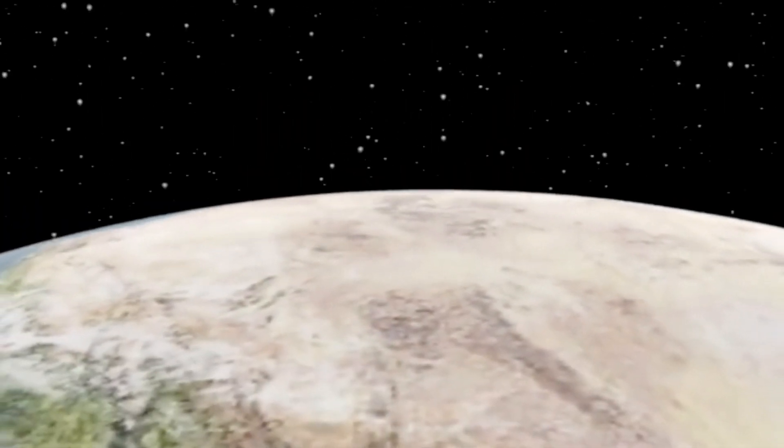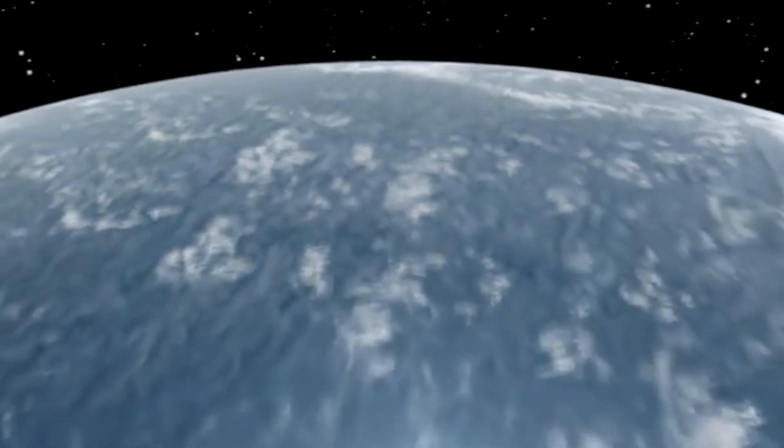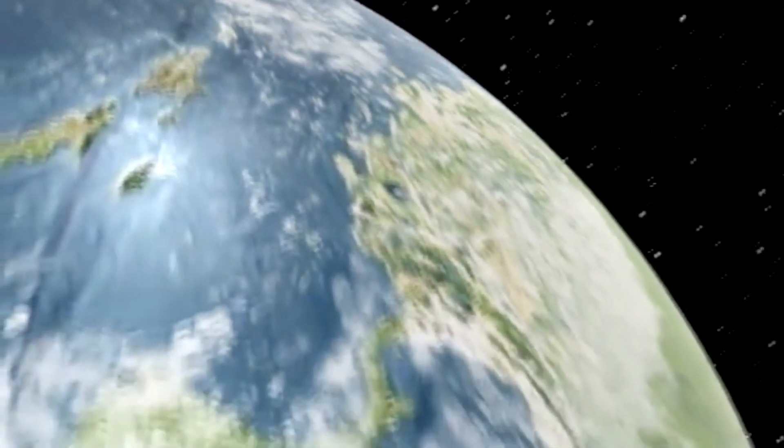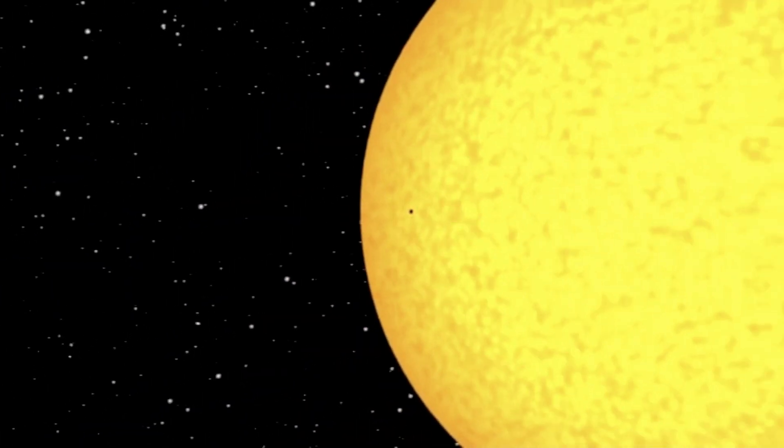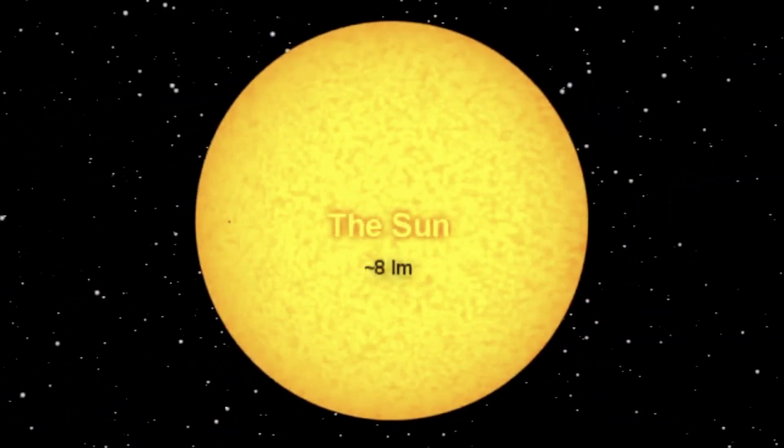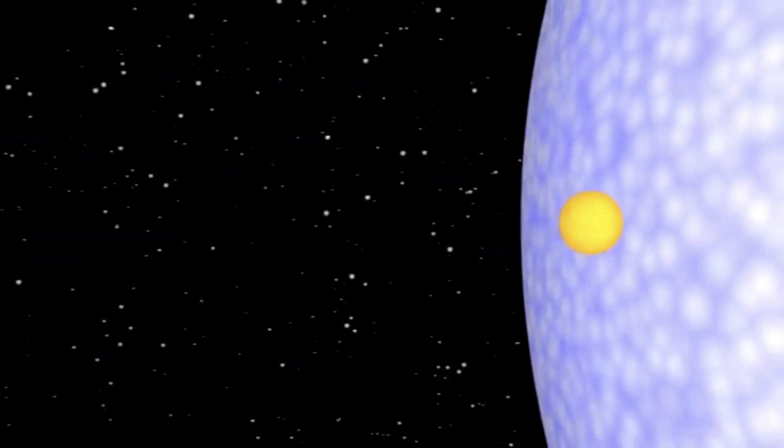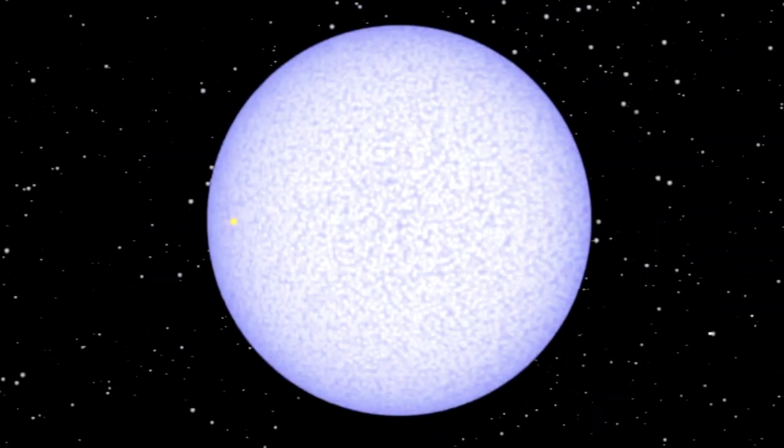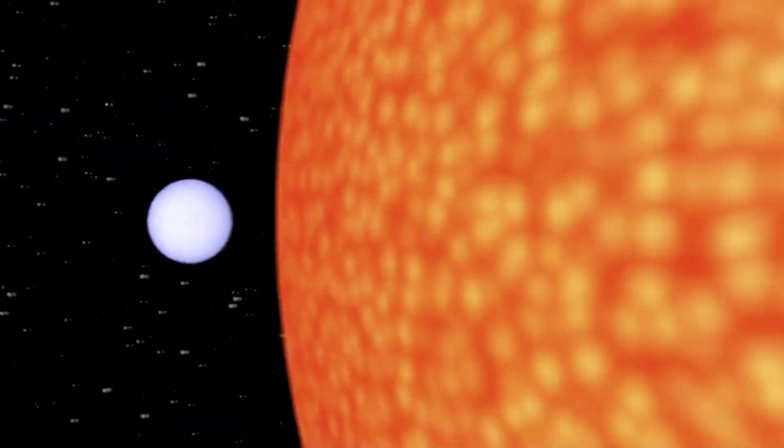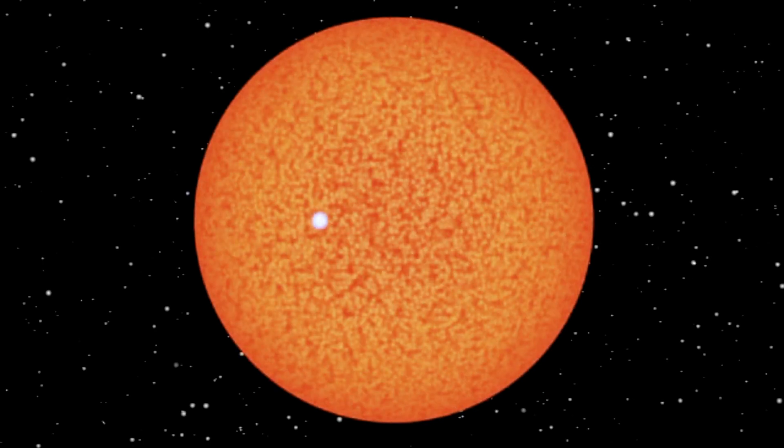Now the worst is this VY Canis Majoris. Have you seen this thing? Talk about making a mockery of us. This thing is unbelievable. So that's the Earth with the Sun. Already the Sun looks ridiculously big. What's happening now? What's that white one? That's insane. And then this is the worst. This is outrageous. This is bloody ridiculous. VY Canis Majoris. Bullshit.